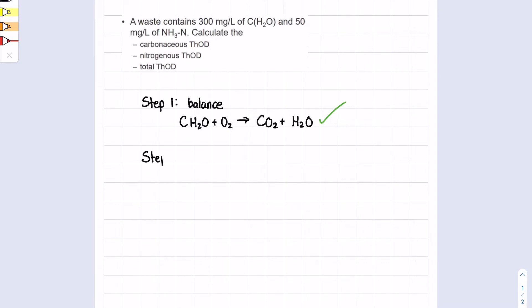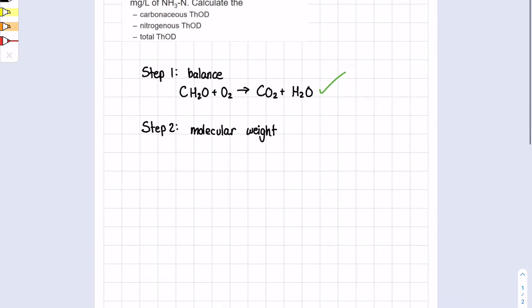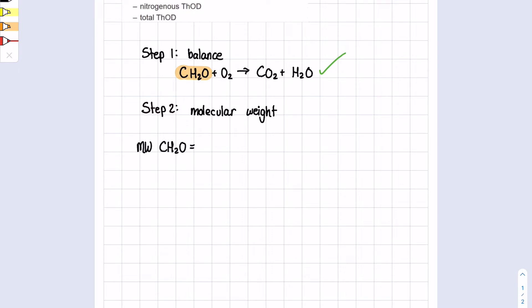Step two is to find the molecular weight of the compound, meaning find the molecular weight of CH2O, because that's what we're starting with for the 300 milligrams per liter in the question. So the molecular weight of CH2O, and I have a periodic table out in front of me, I'm just grabbing these from the table.